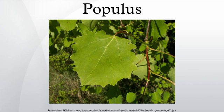Populus section Tacamahaca: Balsam Poplars. North America, Asia, cool temperate. Includes Populus angustifolia (Willow-leaved Poplar or Narrowleaf Cottonwood), Populus balsamifera (Ontario Balsam Poplar), Populus cathayana, Populus koreana (Korean Poplar), Populus laurifolia (Laurel-leaf Poplar), Populus maximowiczii (Japanese Poplar), Populus simonii (Simon's Poplar), Populus suaveolens (Mongolian Poplar), Populus trichocarpa (Western Balsam Poplar or Black Cottonwood), Populus tristis, Populus ussuriensis (Ussuri Poplar), and Populus yunnanensis (Yunnan Poplar).